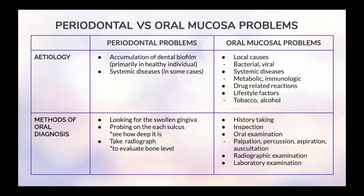Now let's move on to the differences between periodontal versus oral mucosal problems. Based on etiology, periodontal problems are caused by accumulation of dental biofilm, primarily in healthy individuals and systemic diseases in some cases. Whereas oral mucosal problems are caused by local causes such as bacterial, viral, and systemic diseases like metabolic and immunologic conditions, drug-related reactions, and lifestyle factors such as tobacco and alcohol usage.